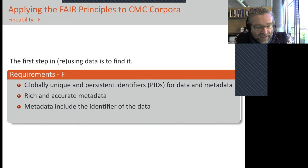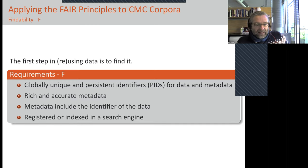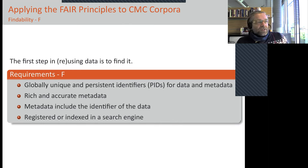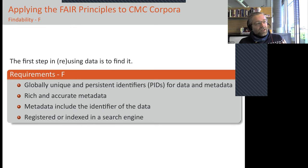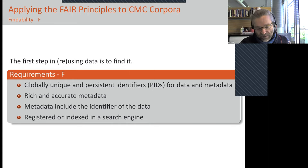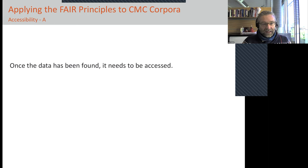The metadata should also point to the actual data. For the usual user or research colleague, it is advisable to have your data indexed in some sort of search engine. Trivially this would be Google — you hear of a corpus, type in the name, and get to the page where you can download it. But there are also other dedicated search engines for corpus data. After finding the data, we need to access it.